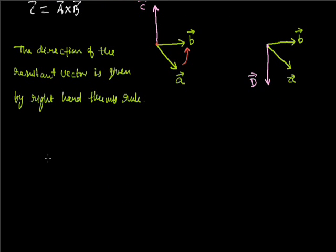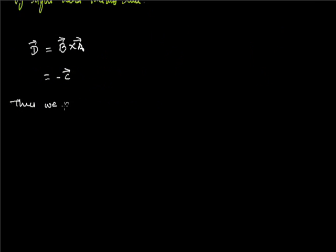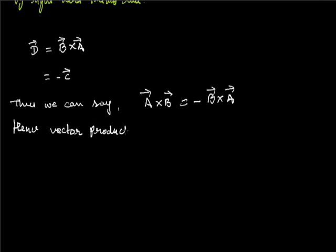The next case is vector product B cross A, where the resultant is vector D. Vector D is represented by B cross A, where vector B rotates in the opposite direction towards A. It is clear from the figure that D is the negative of vector C. Thus, A cross B equals minus B cross A, and hence the vector product is not commutative.